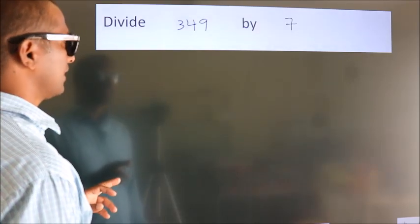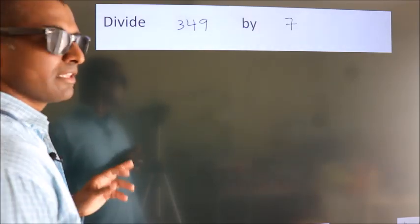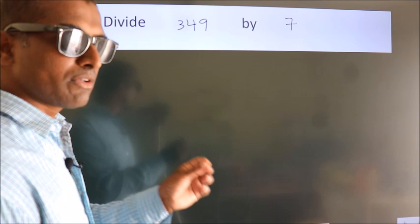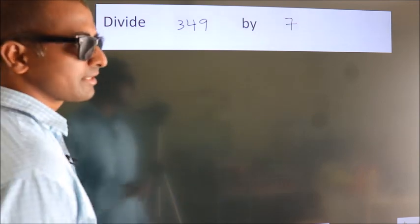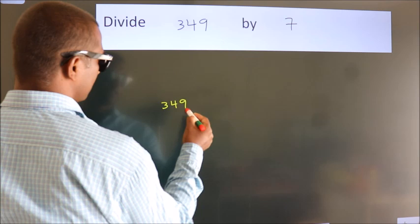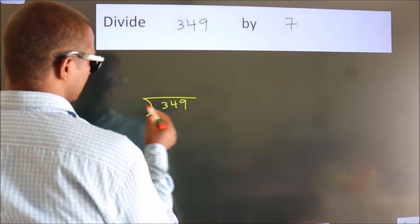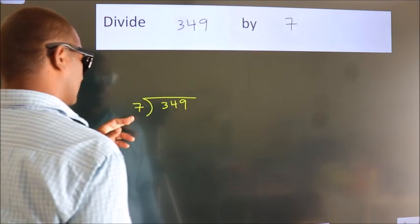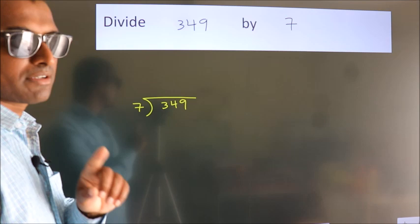Divide 349 by 7. To do this division, we should frame it in this way. 349 here, 7 here. This is your step 1.